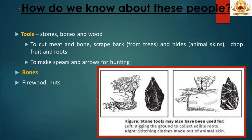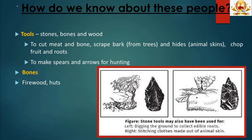Besides these four reasons, they may have also traveled to meet friends and relatives. Archaeologists have found some of the things hunters and gatherers made and used. The most important are the tools they used. Early people made tools from three materials: stones, bones and wood, of which stone tools have survived best. These tools may have been used to cut meat and bones, scrape bark from trees and hides to make clothes.